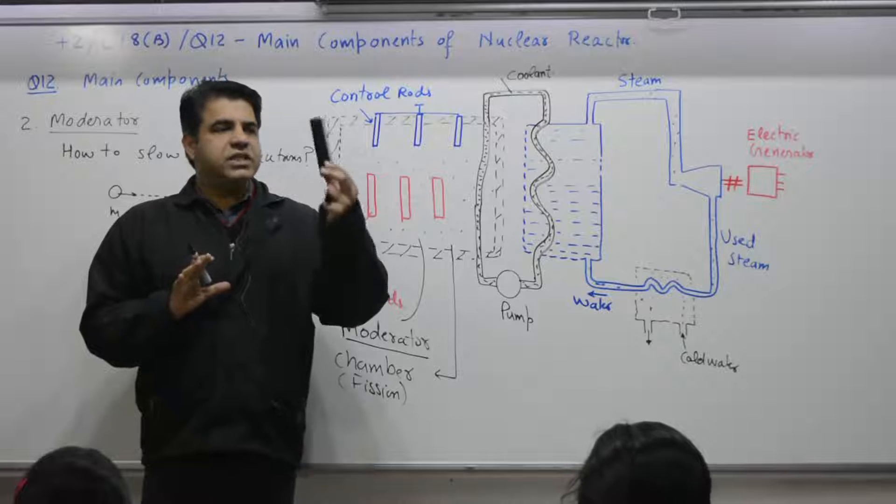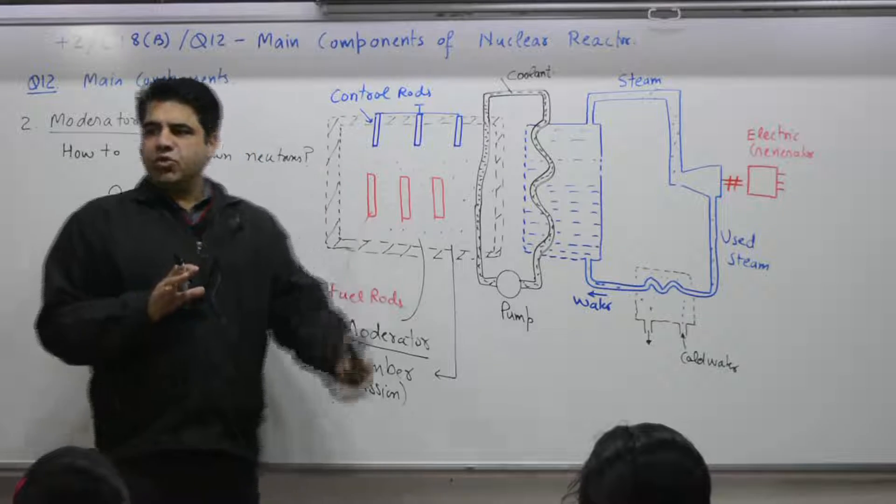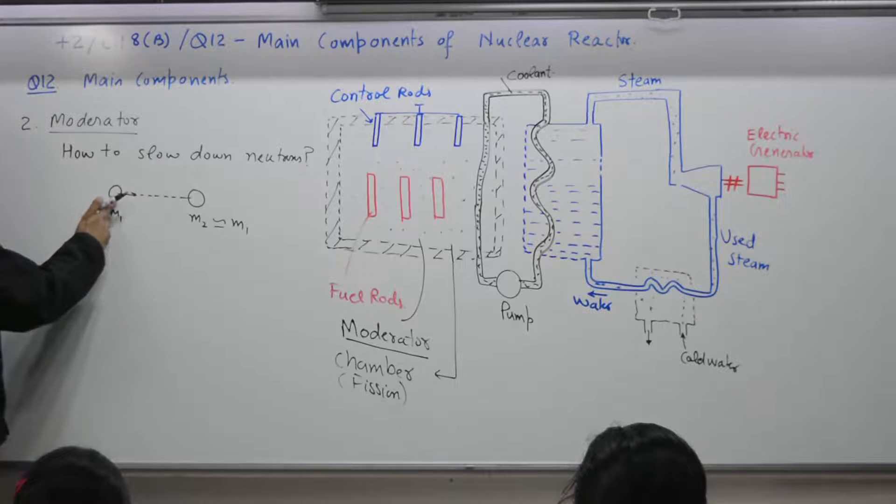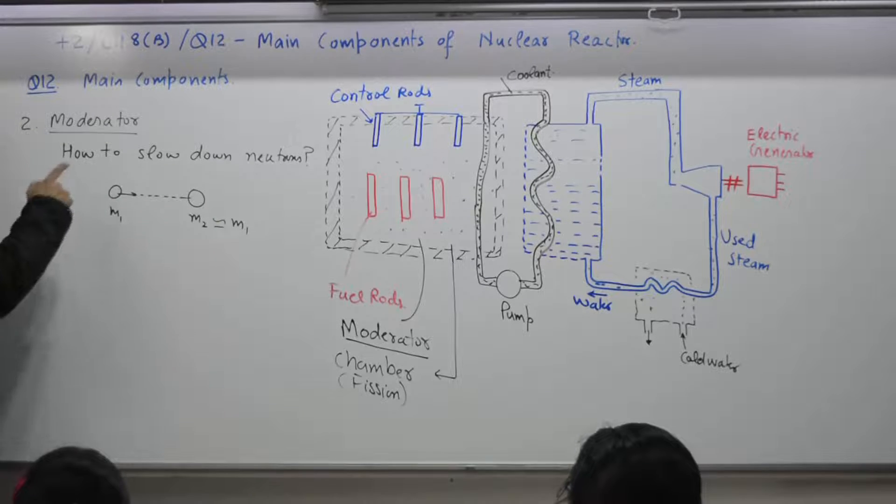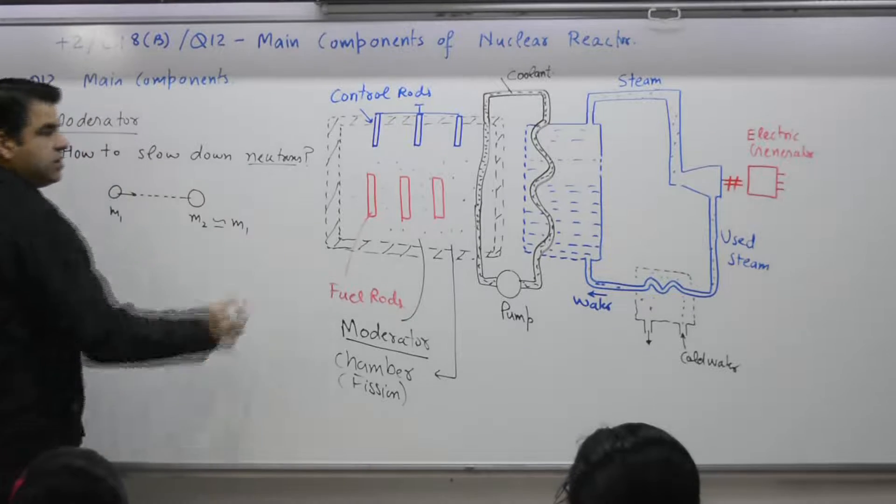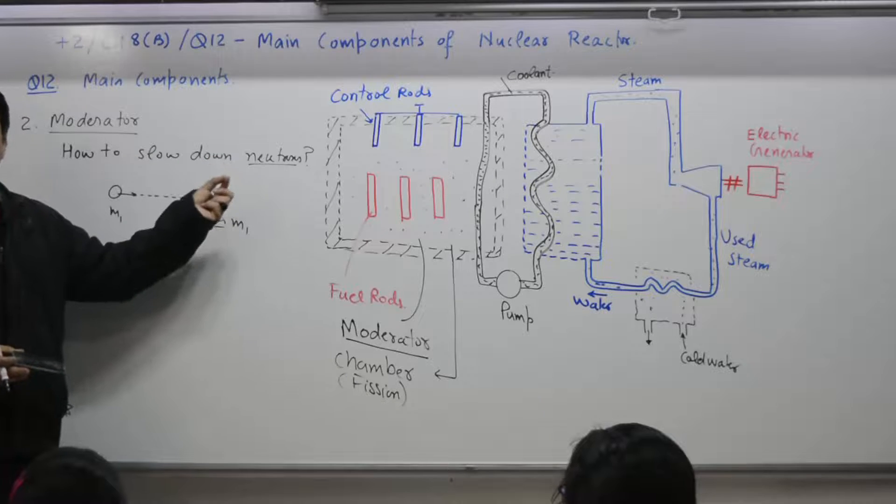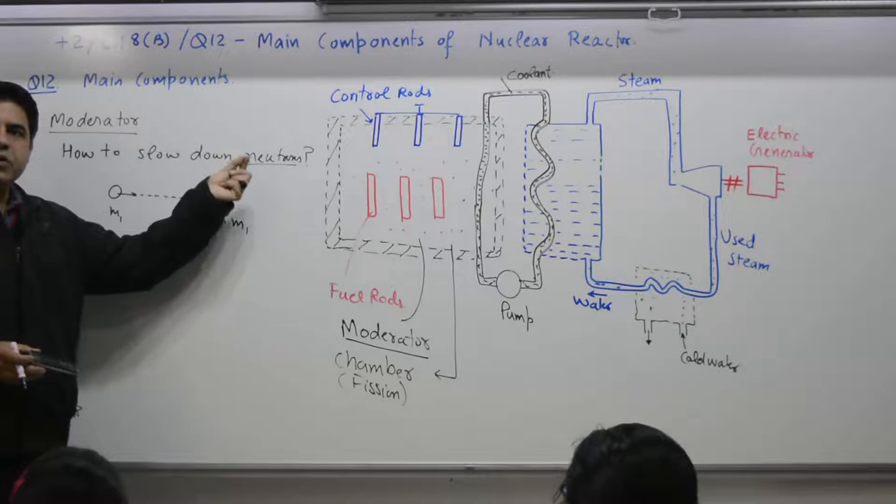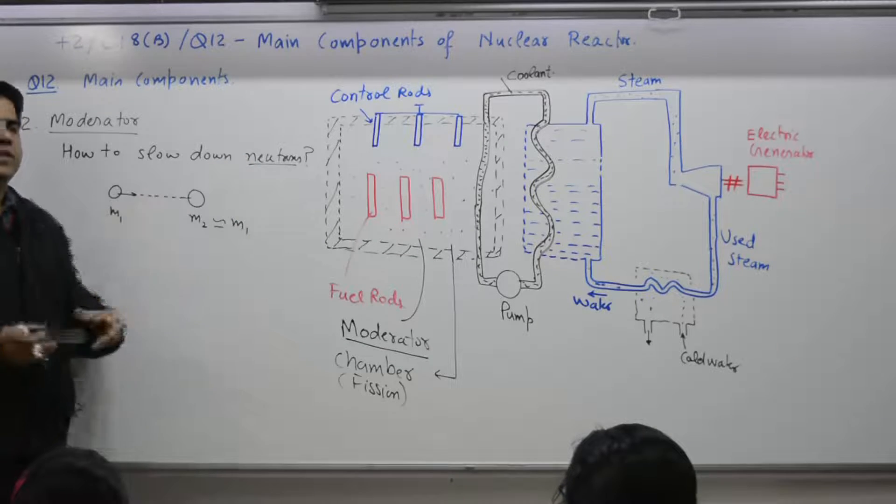So, kinetic energy of the particle remains same. So, heavy placing heavy object on its way won't help. Collision theory. If you want to slow down a particle, place comparable mass on its path. We want to slow down a neutron. So, we will place objects.